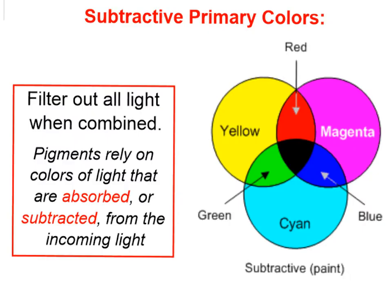This is different from the color of pigments. When you were in grade school, you learned that if you take all your paints and throw them in a bucket together, you're not going to get white — you're going to get something very different. That's because pigments have subtractive primary colors. The subtractive primary colors for pigments are yellow, magenta, and cyan. If you've ever changed toner cartridges for your printer, you'll see these same three colors, because those, in combination to different degrees, produce all the different colors you need. They're called subtractive because they filter out all the light when combined — they rely on colors of light that are absorbed or subtracted from the incoming light.